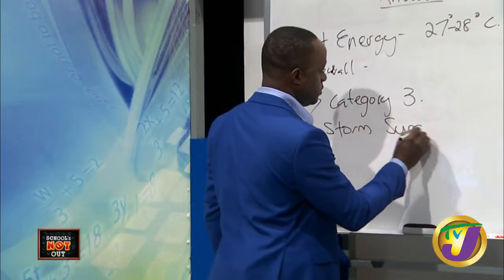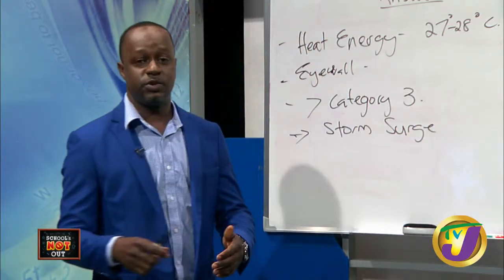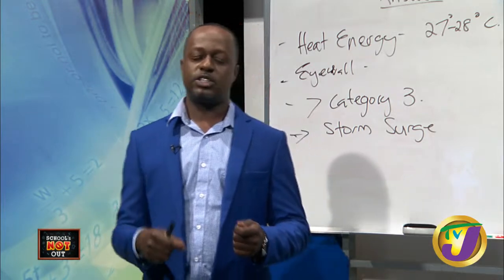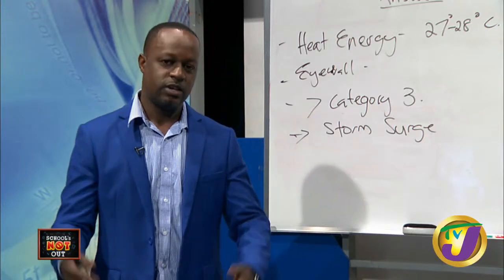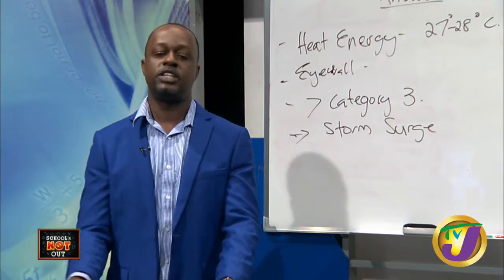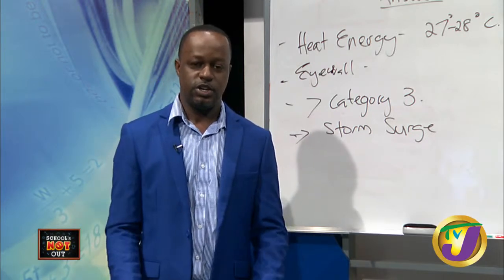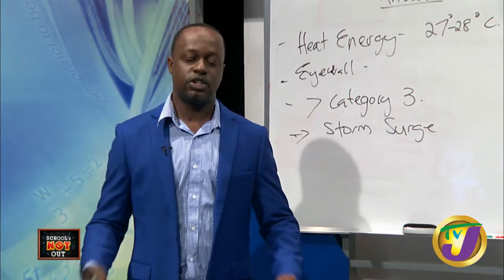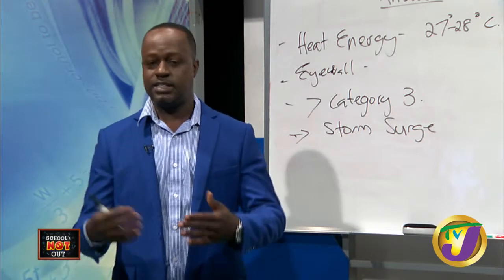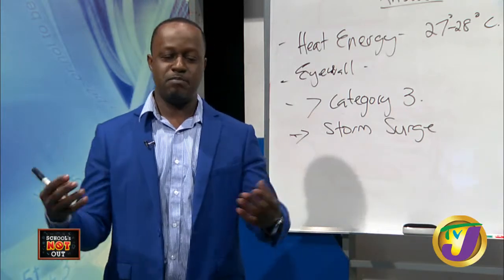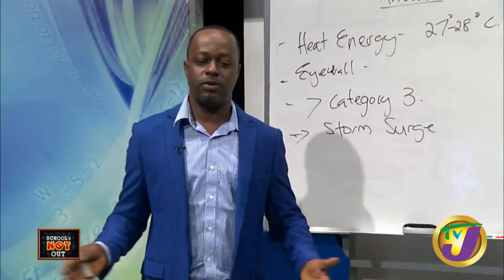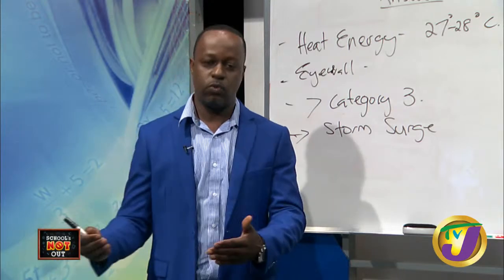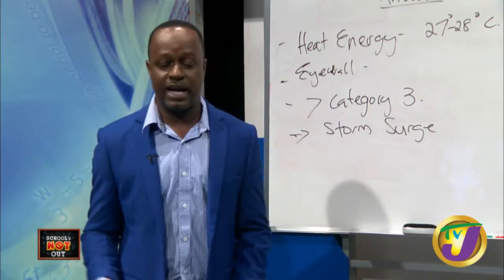Just like the surge protector on your appliances handles excess electricity, a storm surge is a tremendous amount of water being pushed onshore by winds over 220 kilometers per hour. That water can move several miles inland, taking everything out in its path. Six inches of moving water can move a motor vehicle - imagine what 18 feet of water moving under 200 kilometer per hour winds can do.